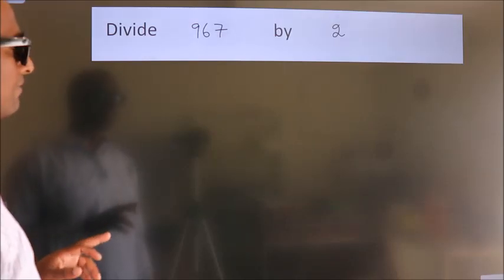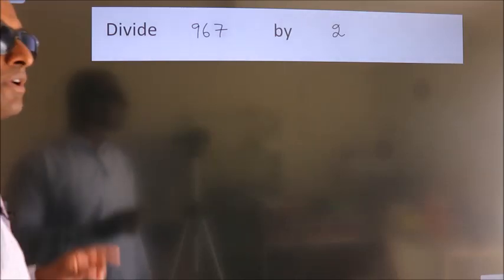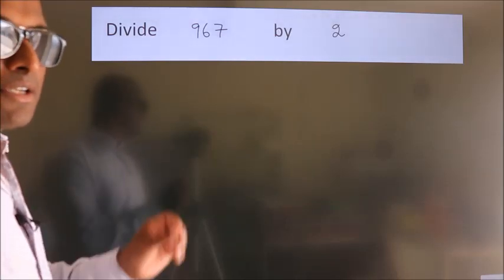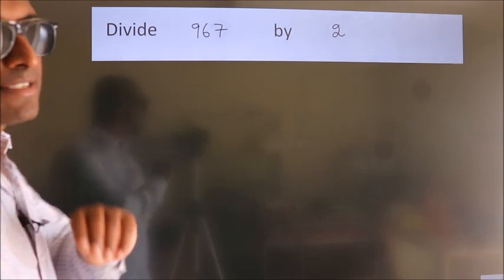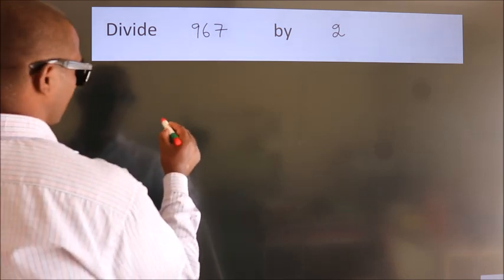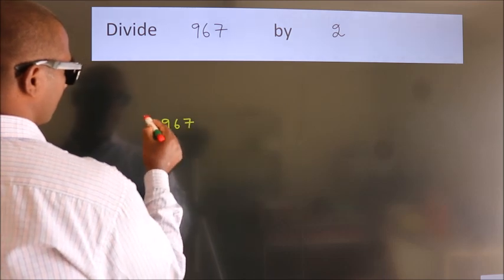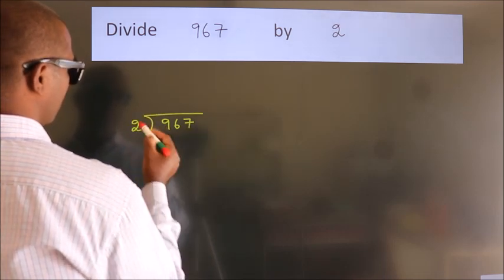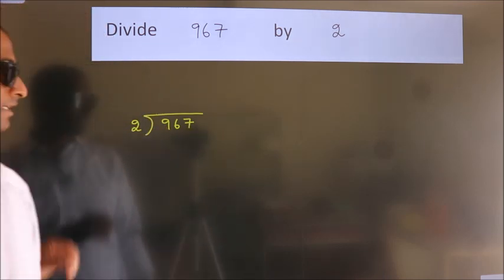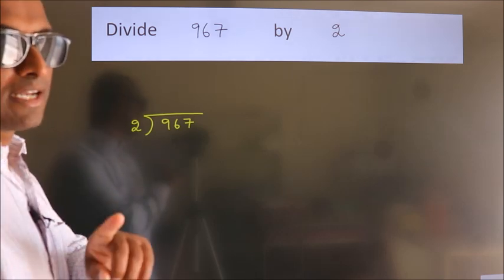Divide 967 by 2. To do this division, we should frame it in this way. 967 here, 2 here. This is your step 1.